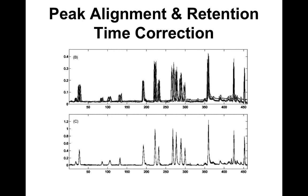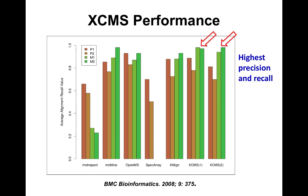Peak alignment and retention time correction: before alignment things are slightly off; after alignment everything is nicely matched. Scaling should also be done. All of these steps — alignment, scaling, peak identification, and distinguishing peaks from noise — are critical. We're focusing on XCMS today because most other tools are not available over the web, and many require complex installation.